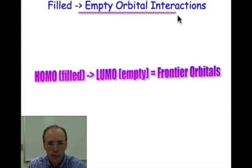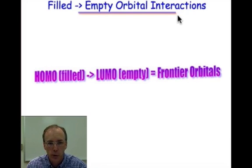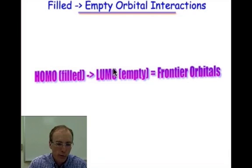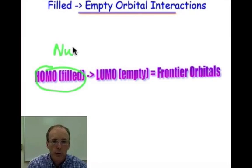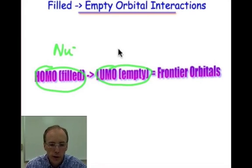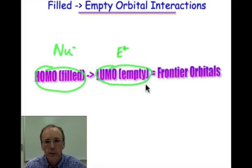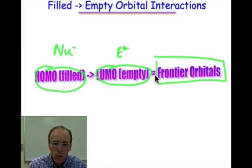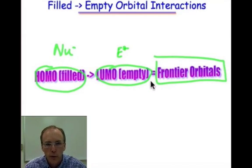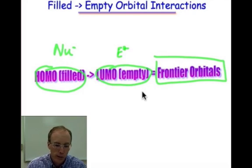Reactions in organic chemistry can be described by the interaction of a filled orbital together with an empty orbital. The most important filled orbital is the highest occupied molecular orbital, or the HOMO, and that's typically associated with the nucleophilic partner. The most important empty orbital is the lowest unoccupied molecular orbital, and that's typically associated with the electrophilic partner. Together, these two orbitals make up what are known as the frontier orbitals, and they're the most important orbitals that describe reactivity in organic molecules.